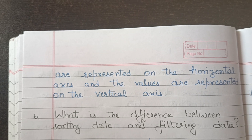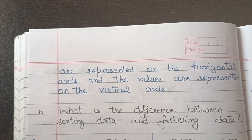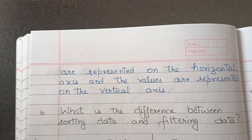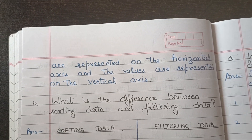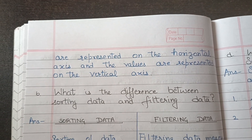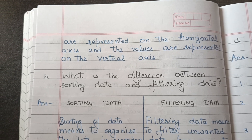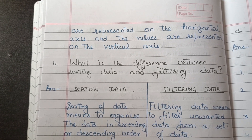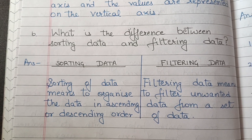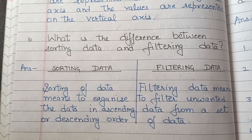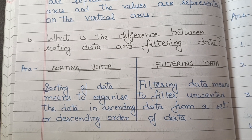Next question is: what is the difference between sorting data and filtering data? Sorting of data means to organize the data in ascending or descending order. Filtering data means to filter out unwanted data from a set of data.